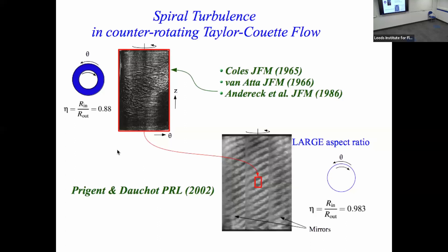Prigent and Dauchot didn't quite discover this first — it had been seen by Coles and Van Atta in 1965 and 1966 in Taylor-Couette flow. But when Prigent and Dauchot used a very large aspect ratio Taylor-Couette apparatus, they saw that what appeared to be a vague turbulent patch was really part of a very regular striped oblique pattern. So it was seen in 1965–66 but not really recognized as what it was until these much larger experiments.